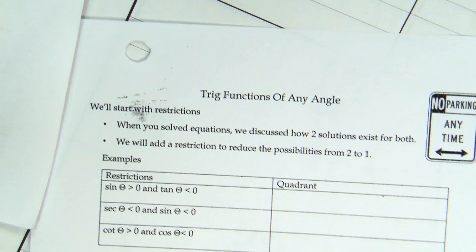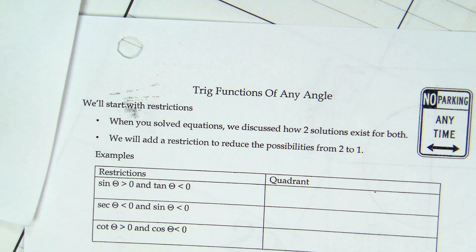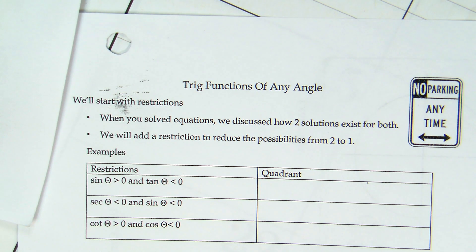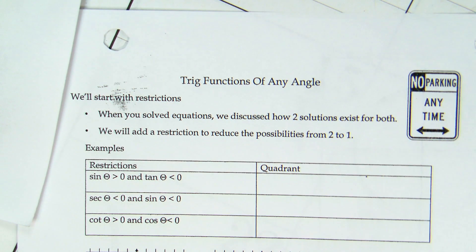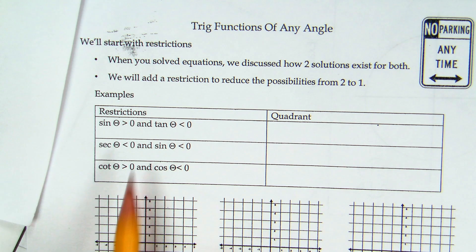So, we just went through solving equations, and there were always zero, one, or two solutions. When you solve the equations, we discussed how two solutions exist for both. We will add a restriction to reduce the possibilities from two to one. So, these restrictions could include examples like this.